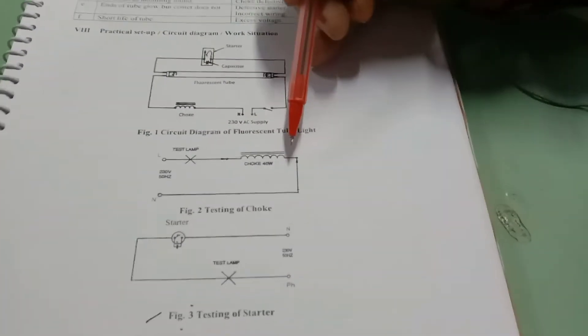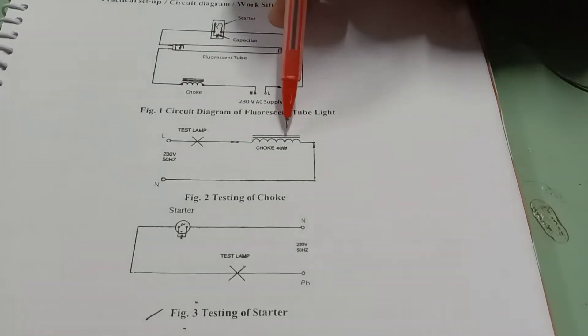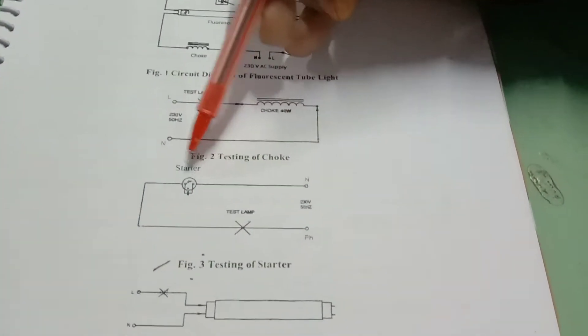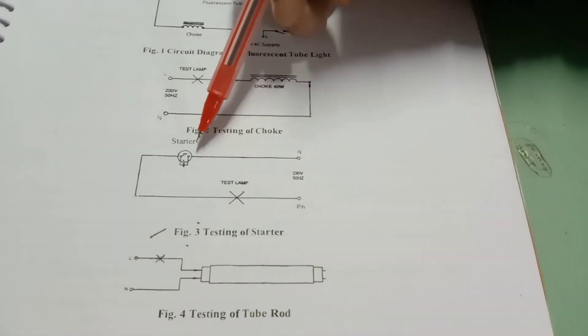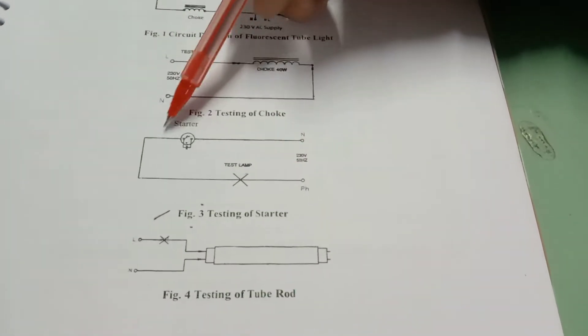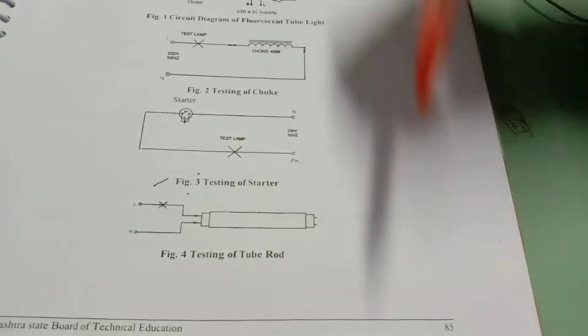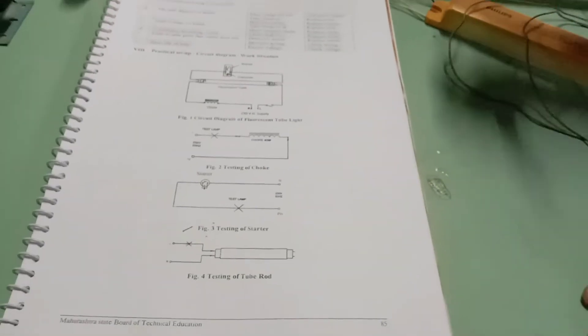In this next diagram we are going to test that choke with the help of test lamp. In this diagram you can observe that we are going to test the starter with the help of test lamp. And in the last we are going to check the tube rod. These are the testing we are going to carry out. Now we will see the actual performance.